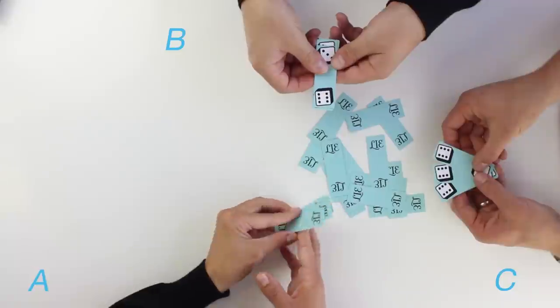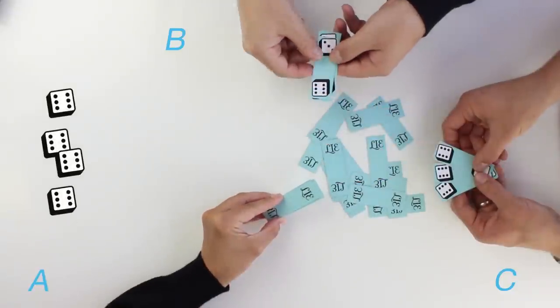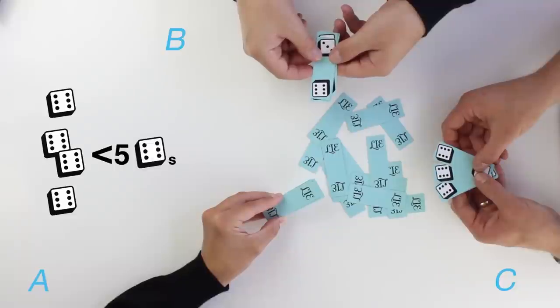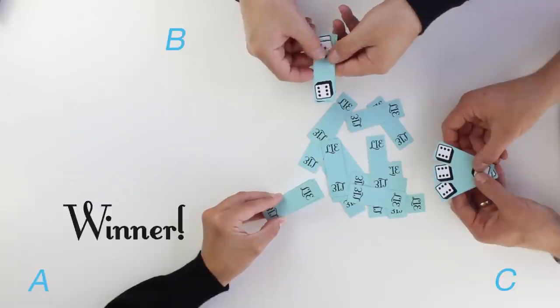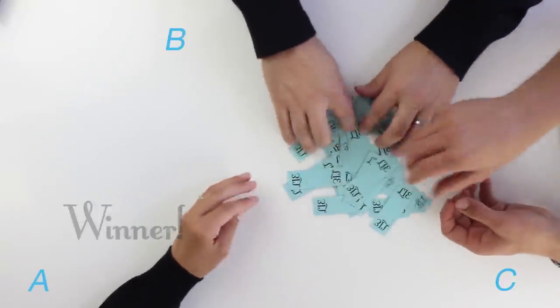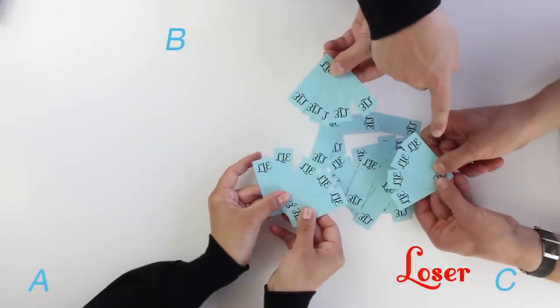When all players show their hands, we see that there are only four sixes, which is less than Player C's bid of five sixes. Player A wins the challenge and starts the next bidding round, and Player C will draw one less card in the next round.